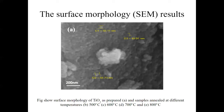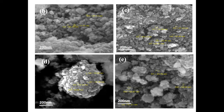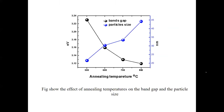We also did surface morphology using scanning electron microscopy and found the grain particle size, which is on the nanometer scale. This is the surface morphology result.